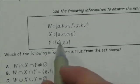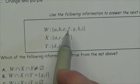Okay, so in this question right here, we're looking at these sets. W is A, B, E, F, G, H, I.